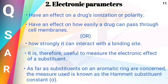This is the third class of QSAR. We have already seen hydrophobicity and physical-chemical properties. In this class, we are going to see the electronic parameters and how they are related to biological activity. These electronic parameters have an effect on drug ionization or polarity, and on how easily a drug can pass through the cell membrane or how strongly it can interact with the binding site. That's why it is useful to measure the electronic effect of a substituent.